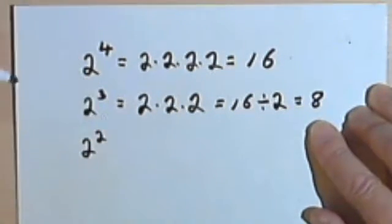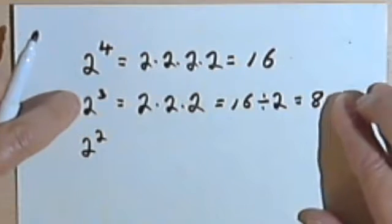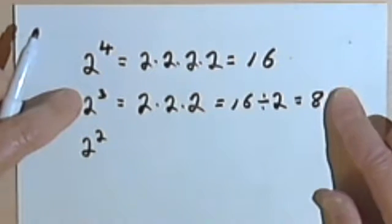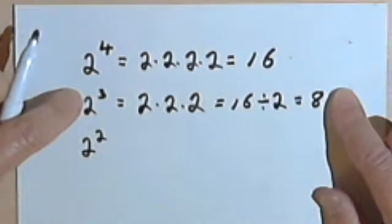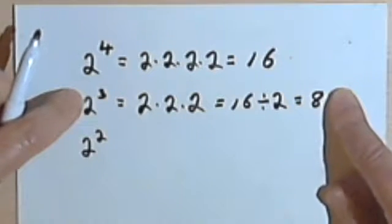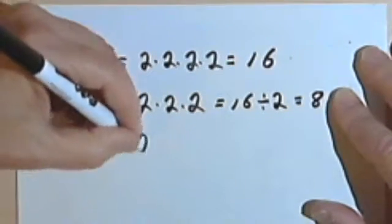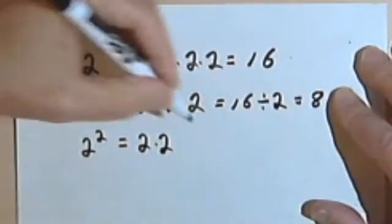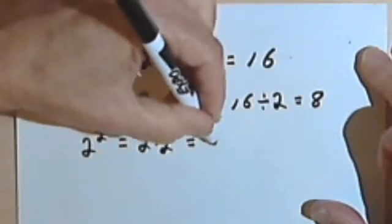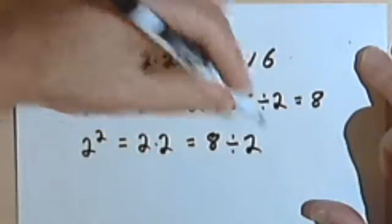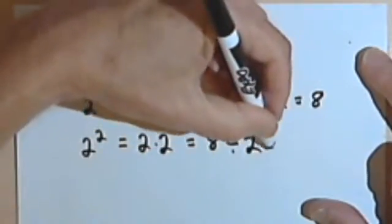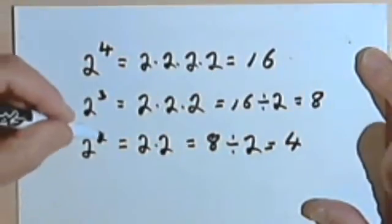If we have 2 squared, we're taking 2 to the 3rd and dividing it by itself one less time, or dividing it by 2, that would be the same thing. So we have 2 times 2, or we could say that's the same as 8 divided by 2, and 8 divided by 2 is 4, which is what 2 squared is.